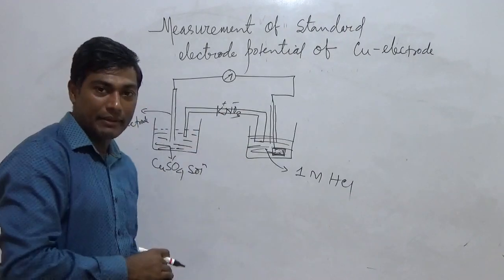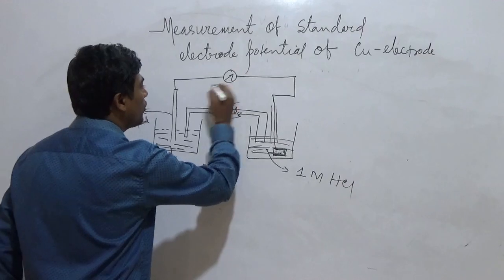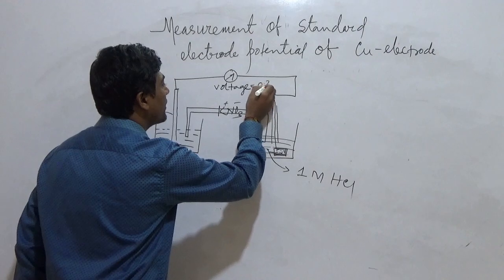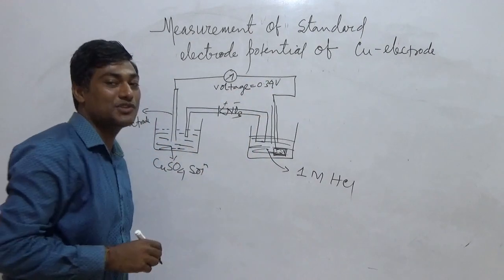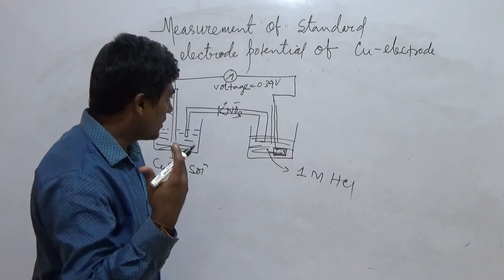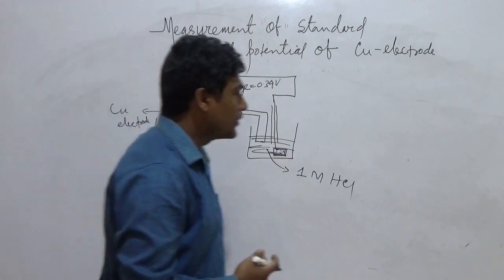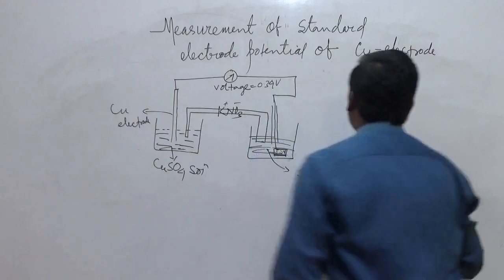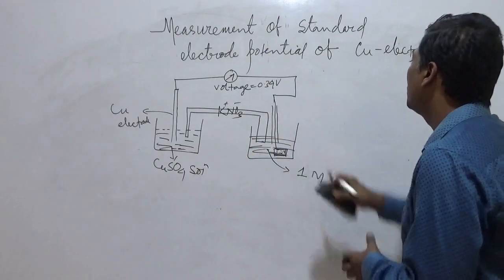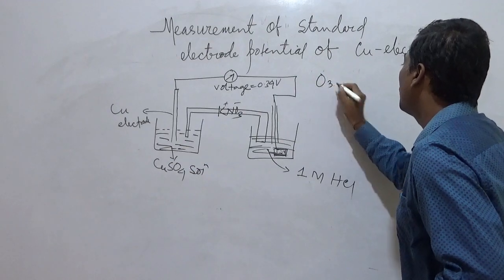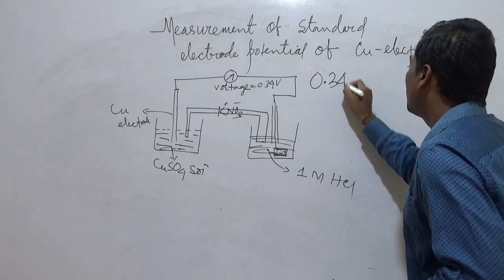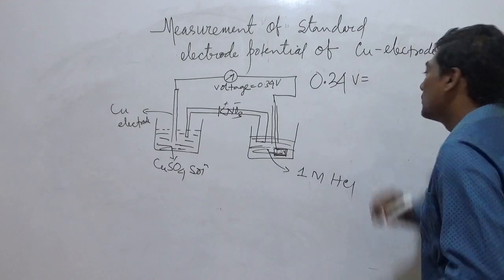So after you couple them, now a steady voltage, steady means constant. The constant voltage of 0.34 volt is observed. Once you get a constant voltage, you see what happens. You see, 0.34, 0.34, 0.34 volt.